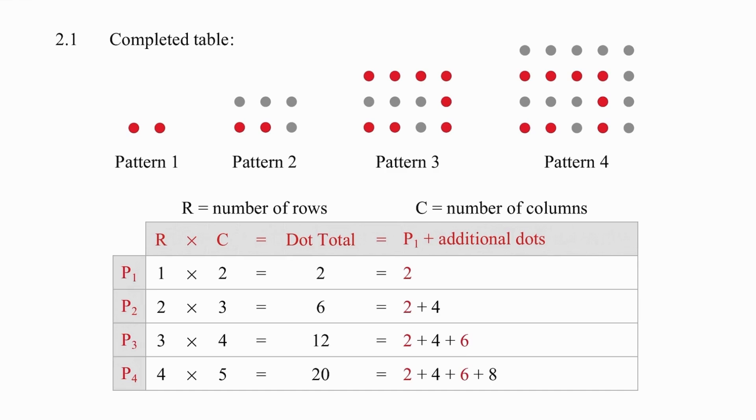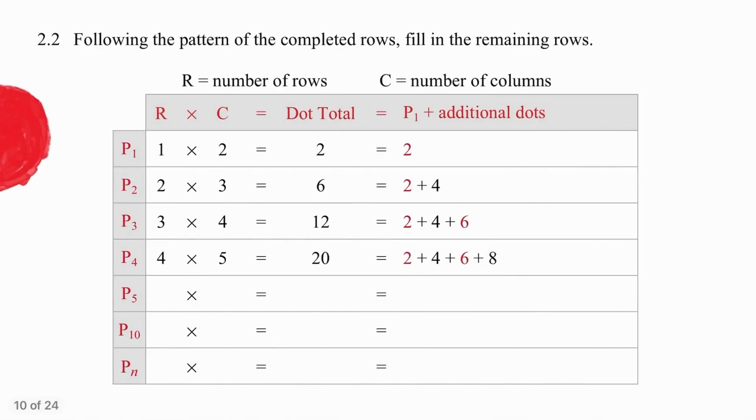It's becoming quite clear that we simply take the pattern number, pattern number plus one, and the product, and that we then add on the next even number. To get that even number very easy, it is literally just double the pattern position. Pause the video, complete the table, and then we'll look at the results together.